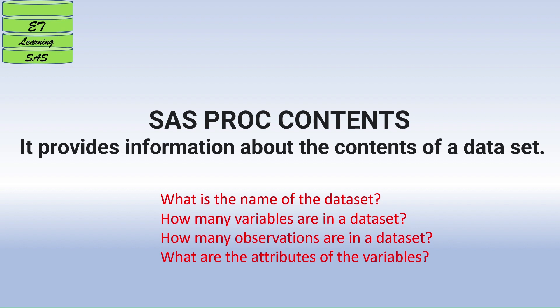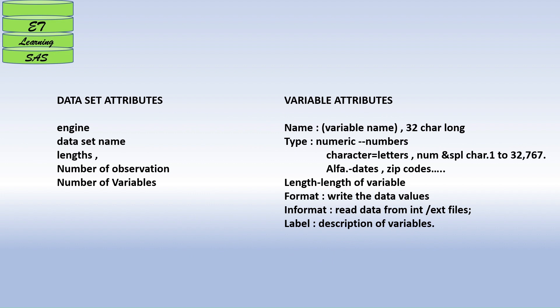From PROC CONTENTS you get basic dataset attributes like what engine you are using to process the data, the name of the dataset, the length, how many observations and variables there are. From the variable attributes you will know the names of the variables, their types — numeric, character, alphanumeric, or date — and also their length, and any format or informat associated with them.